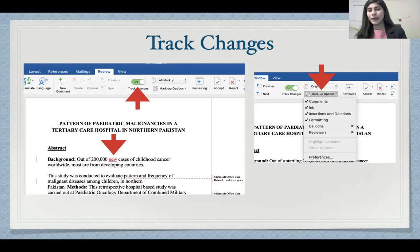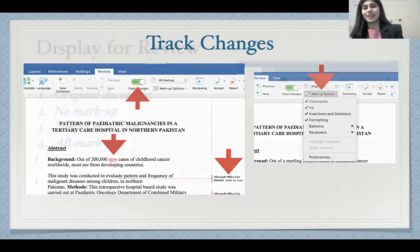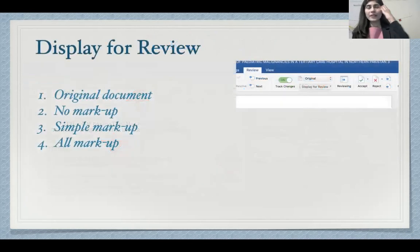And these will be shown by highlighting them in a different color, by underlining them, or by writing them down in a column. There's also an option for the display for review, and what this basically means is that you get to control exactly which form of your document you want to see.